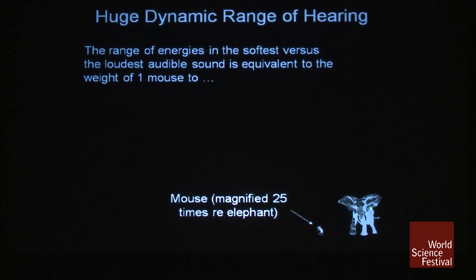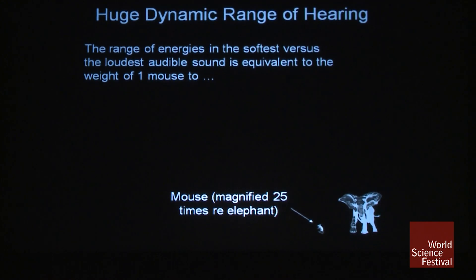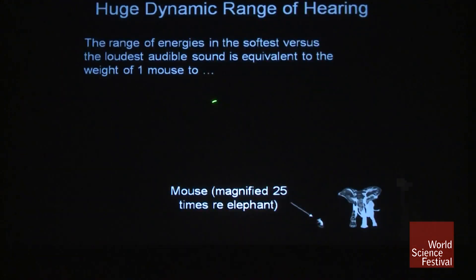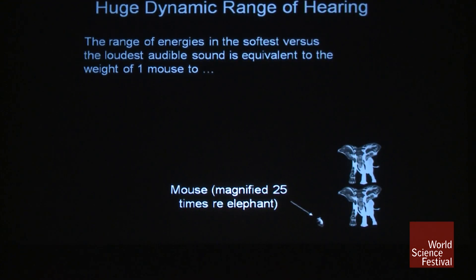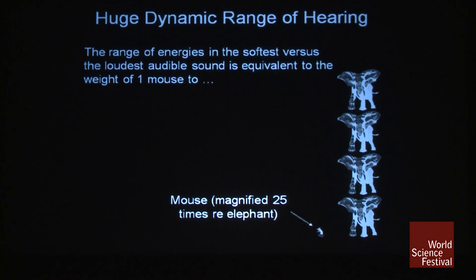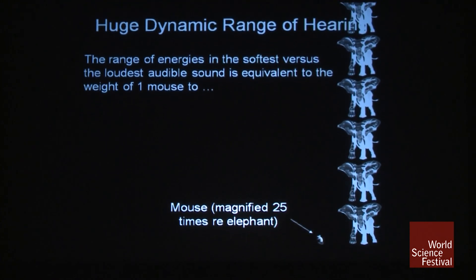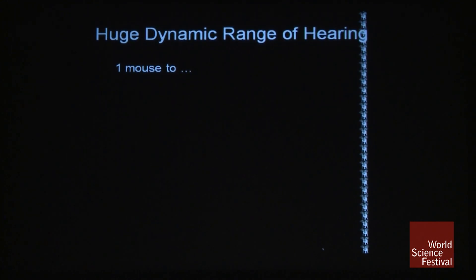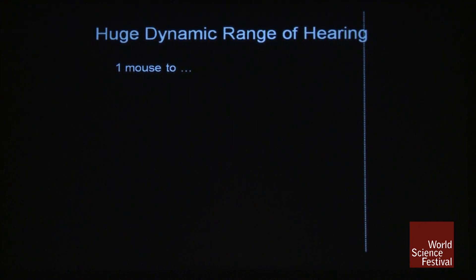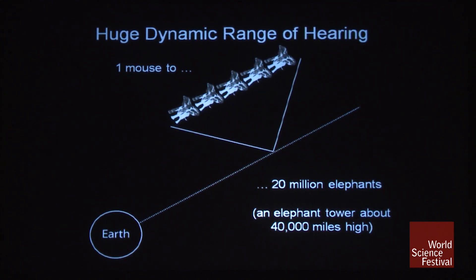It's useful, as I show here, to express the answer in elephants. But it turns out that the ratio from the quietest to the loudest sound is not just the weight of one mouse to one elephant. In fact, it's not even one mouse to two elephants, or to three elephants, or even to five elephants, or to 50 elephants, or even to 500 elephants. It turns out that the ratio of the quietest to the loudest sound is equivalent to the ratio of one mouse to 20 million elephants.